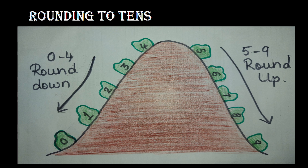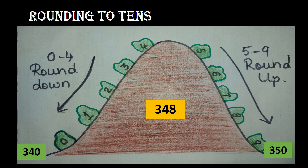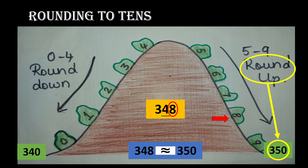Here I have a three-digit number 348. If I round this off, I should either get 340 or 350. Here I have 8 in its ones place, so 8 is towards the right side of the mountain, hence this should be rounded up. 348 will be rounded as 350, hence we say 348 is approximately equal to 350. Now we recalled how to round the number to its tens.